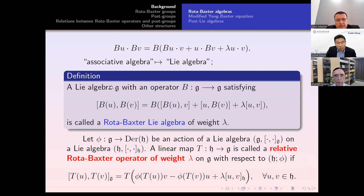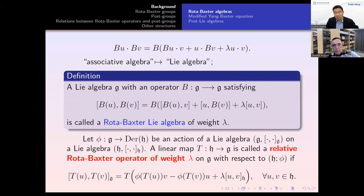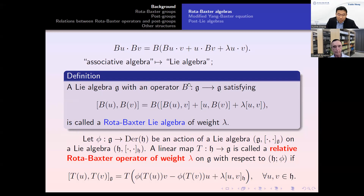So Rota-Baxter operators are generalizations of the integration operator. In the sequel we will only consider Rota-Baxter operators on Lie algebras, replacing the associative multiplication by the Lie bracket. Then we immediately obtain the notion of Rota-Baxter operator on Lie algebras. Here G is a Lie algebra and B is a linear map satisfying this equality, and the pair (G, B) is called a Rota-Baxter Lie algebra.